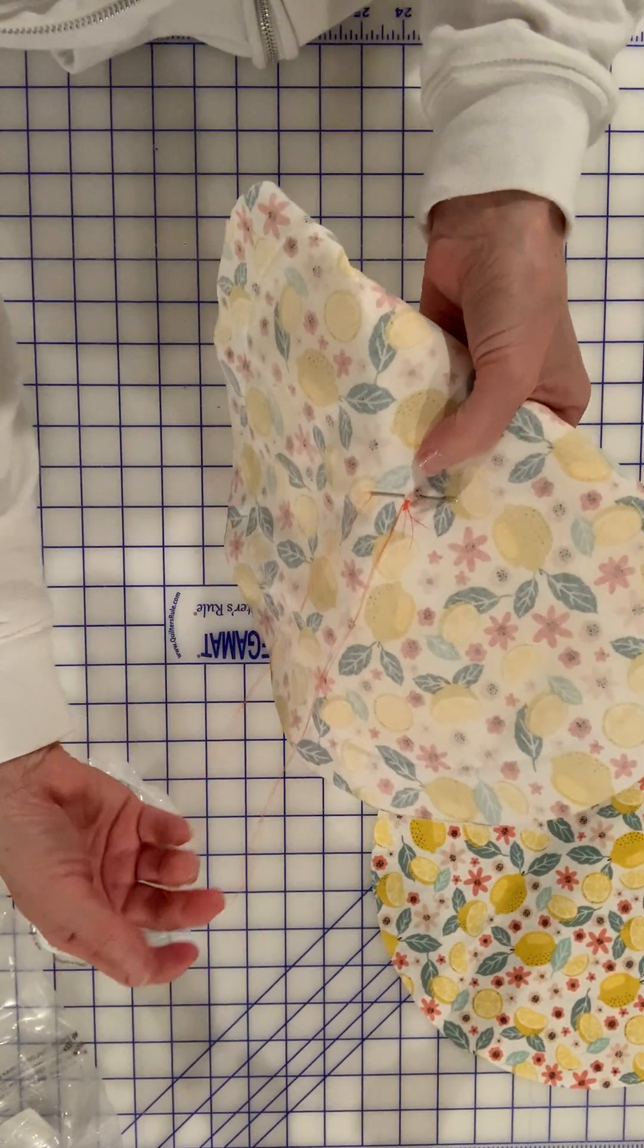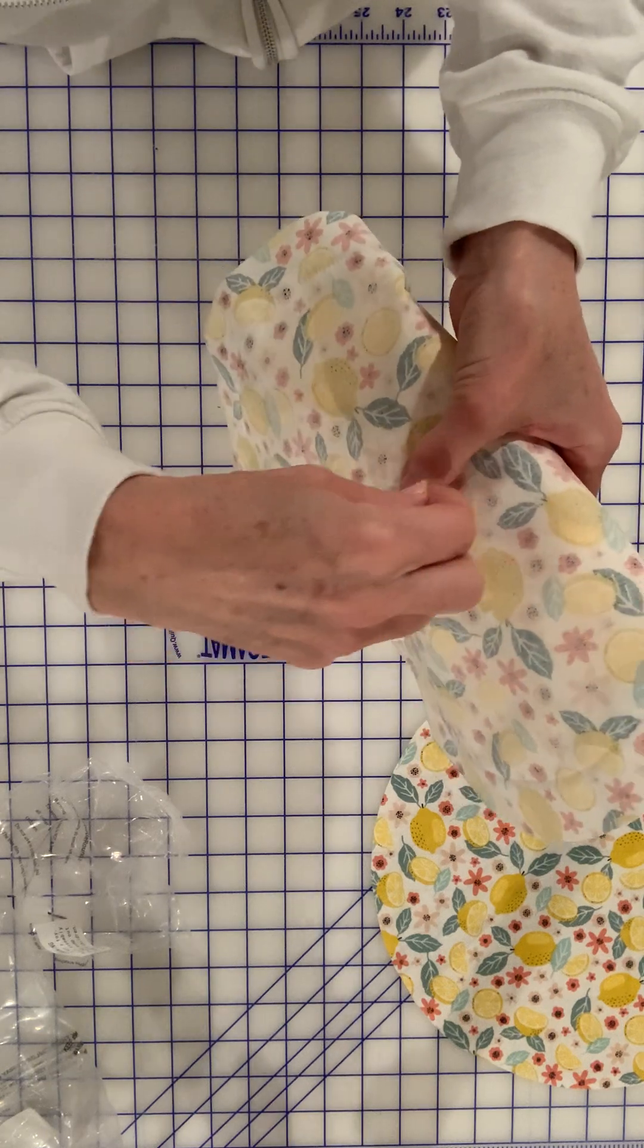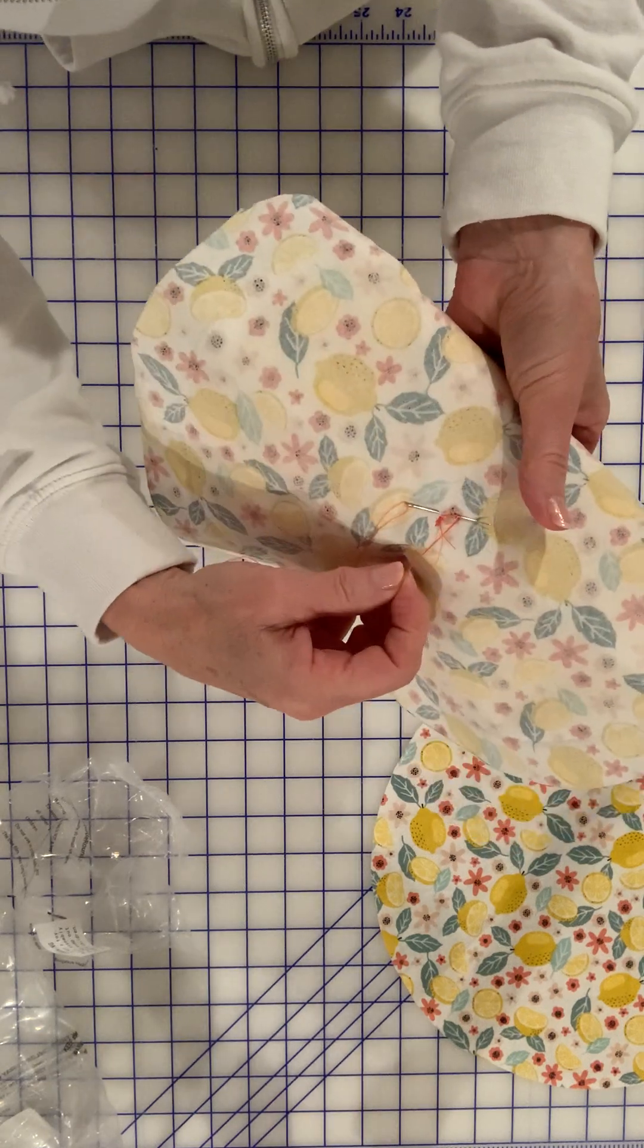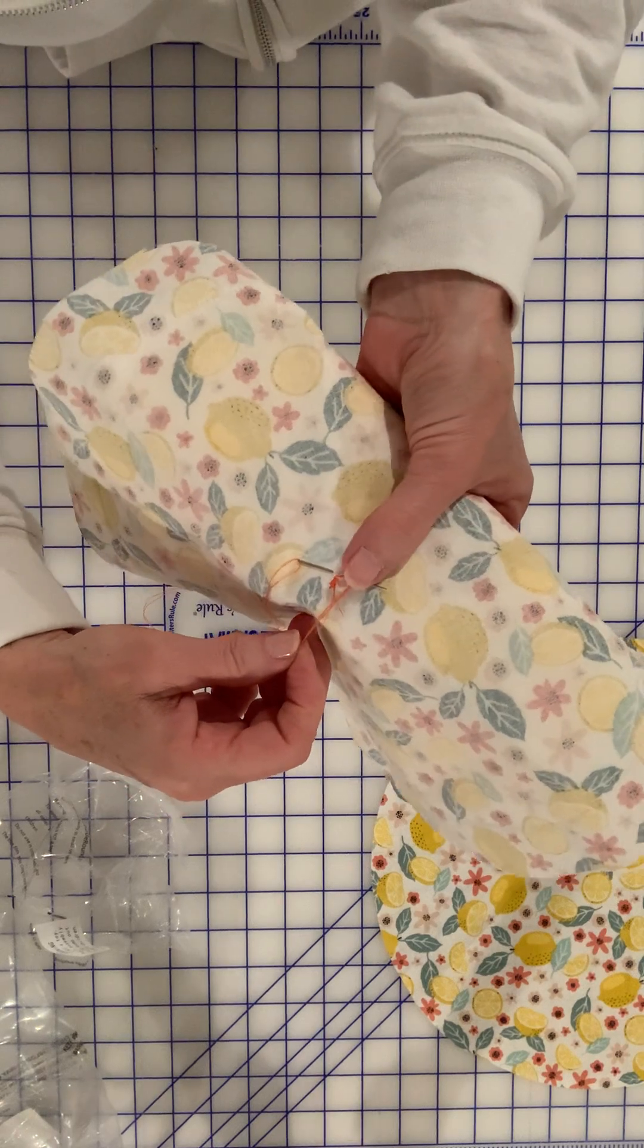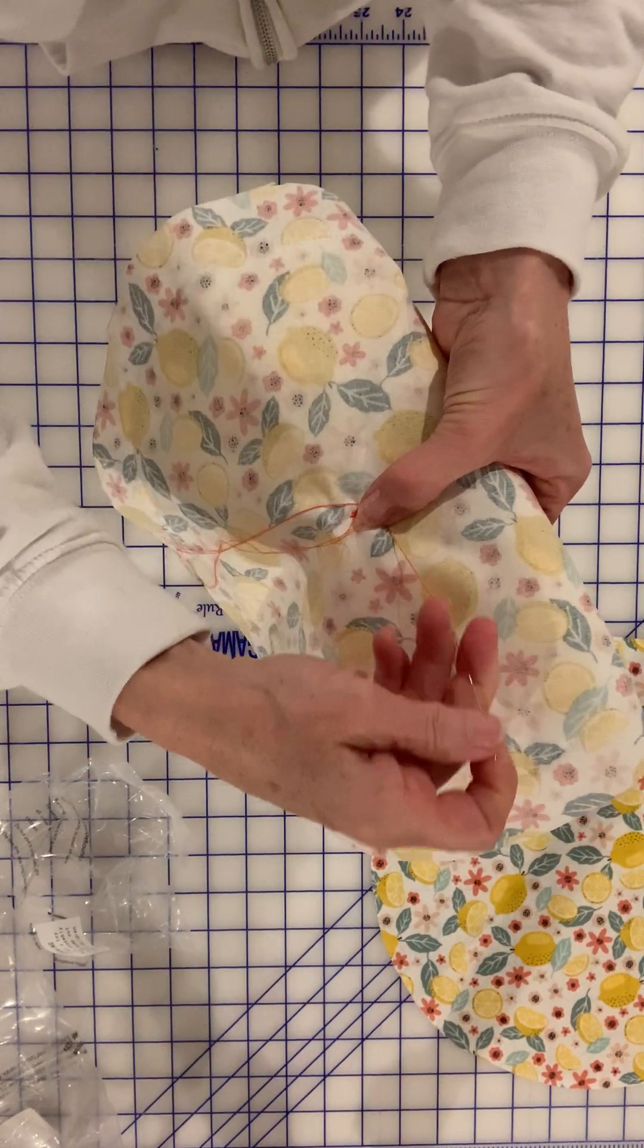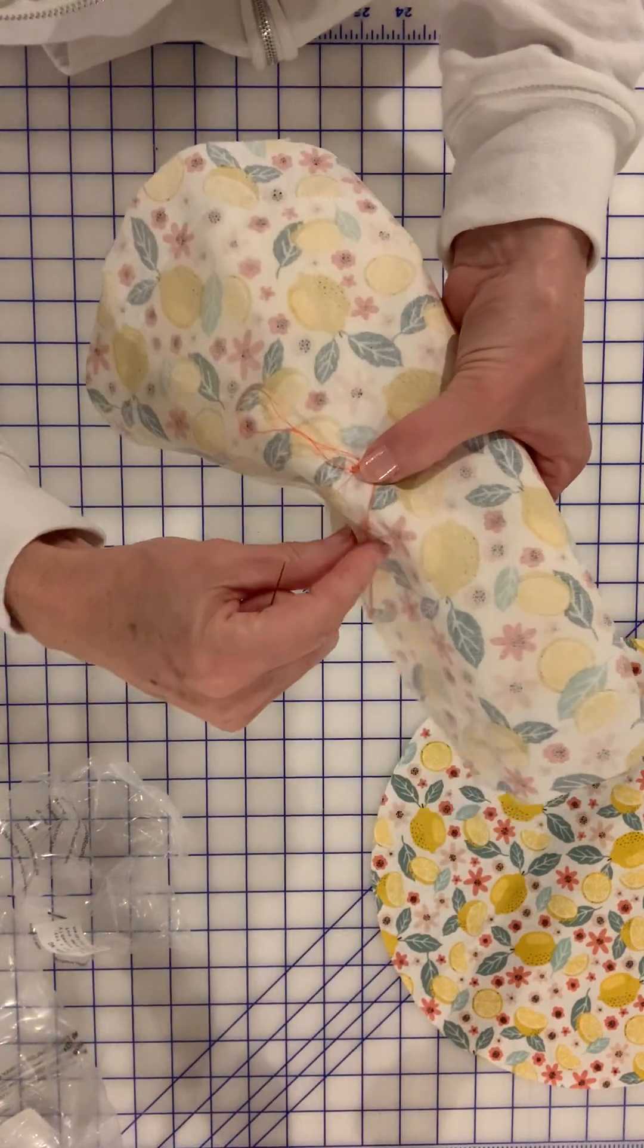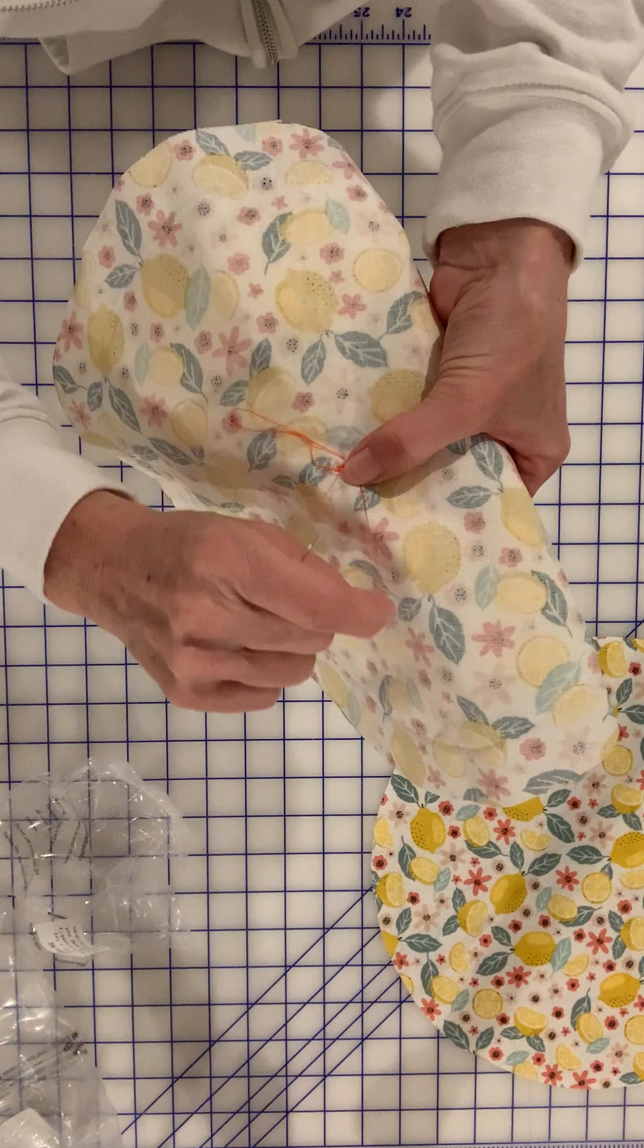I'm going to take this end of the thread and wrap it around the pointy part of the needle twice, so now there's a loop on that needle. I'm going to gently put my thumb down to hold that loop down. Now I'm pulling this thread through, and I'm pulling this thread. It's pulling through that loop that I just made on the needle, and that is going to make a knot.